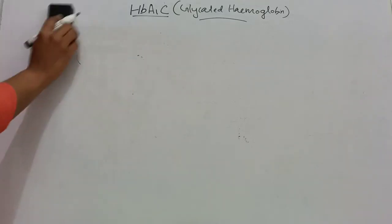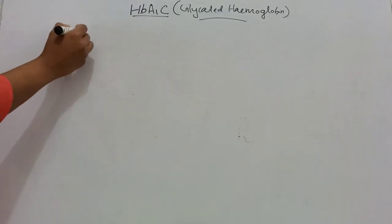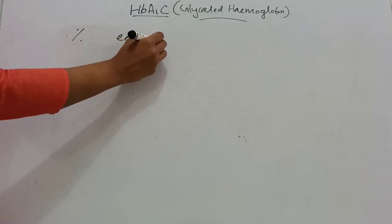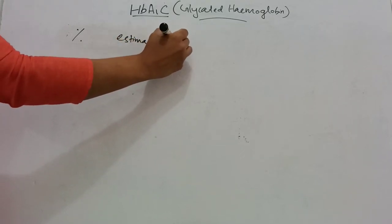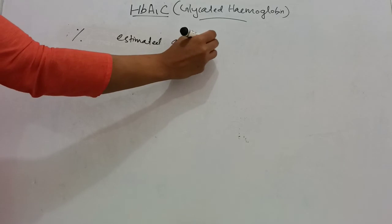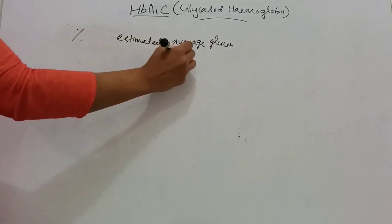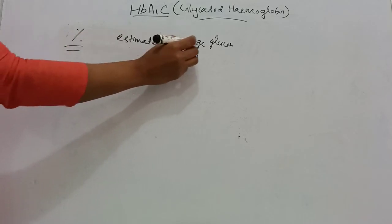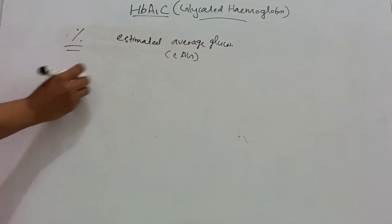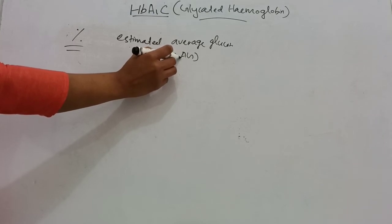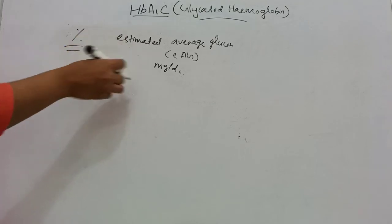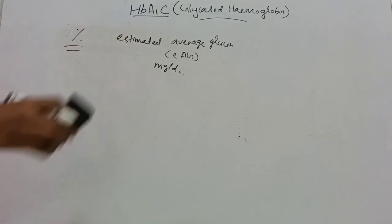HbA1c values are given as percentage or can be expressed as estimated average glucose (EAG). This EAG uses the unit mg per dL, which is the same as that of blood glucose test.